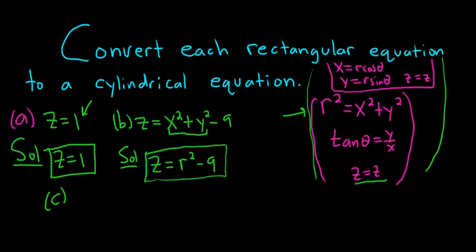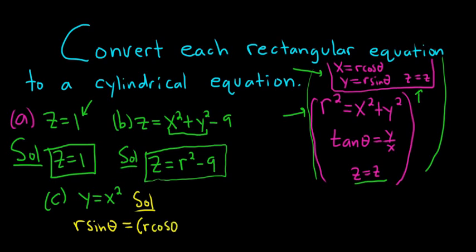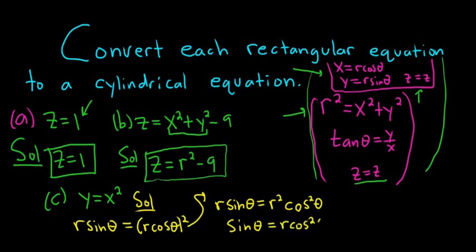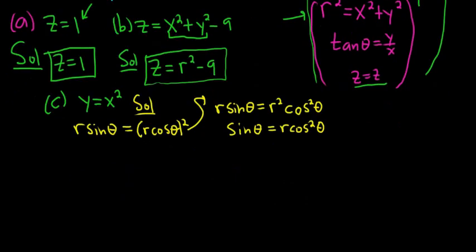These are all pretty easy — this next one is a little bit harder. So y equals x squared. For this one, it might be beneficial to go back and use the cylindrical-to-rectangular formulas. We'll start by replacing y with r sine theta, and x with r cosine theta, so we get r sine theta equals r squared cosine squared theta. We could try to solve for r, so we divide everything by r to get sine theta equals r cosine squared theta. Then divide both sides by cosine squared, so r equals sine theta over cosine squared theta.